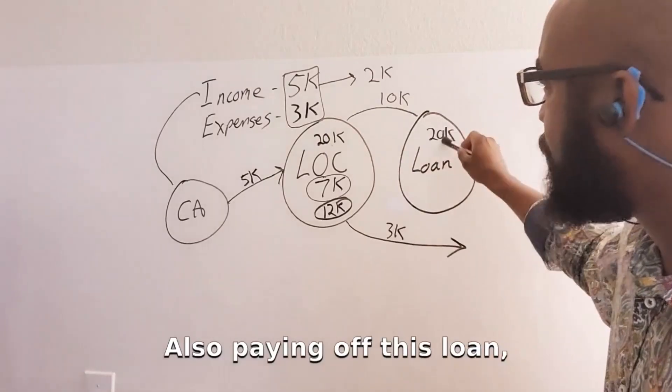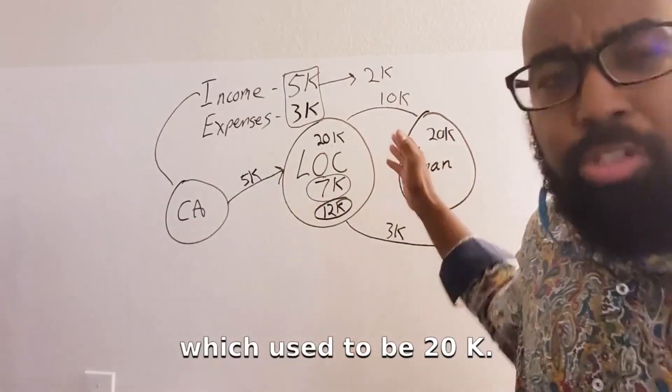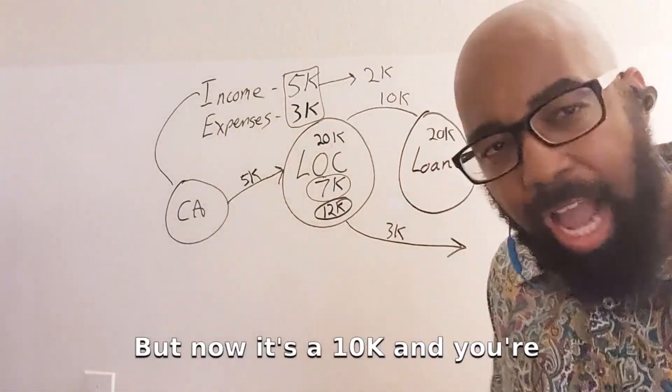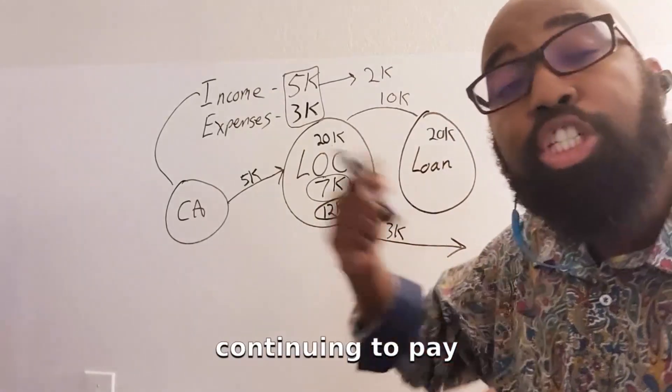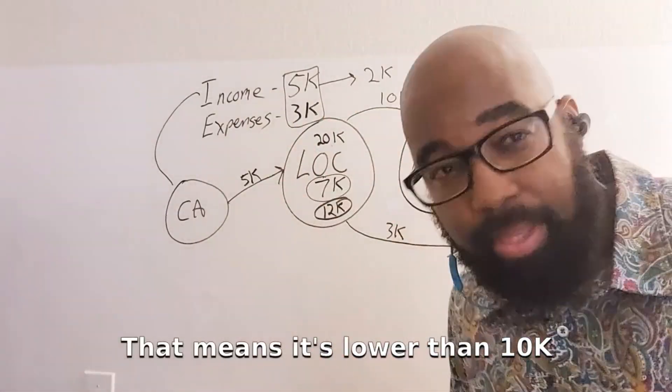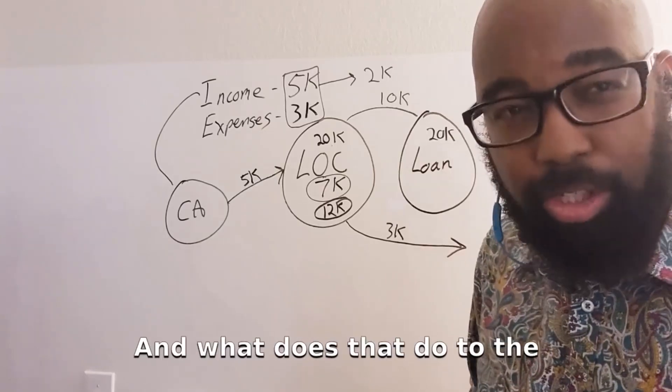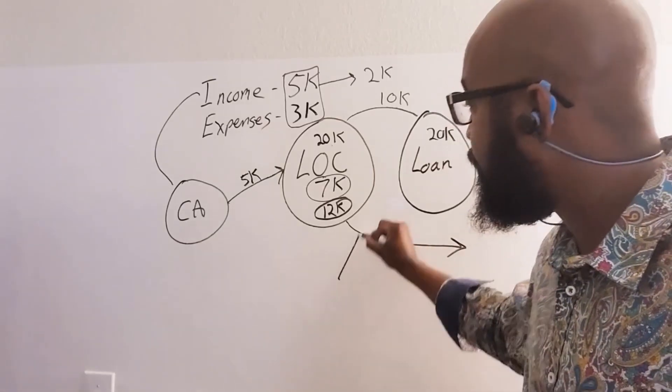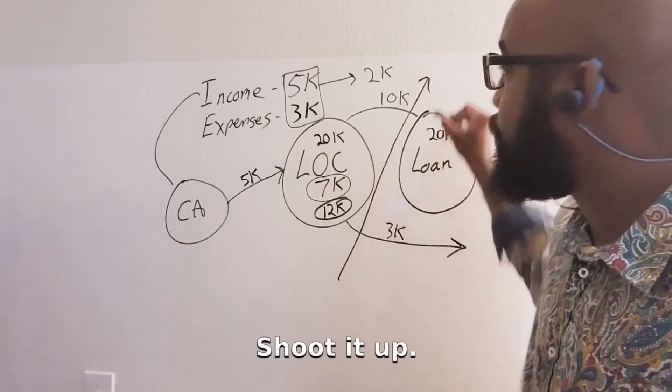We're into also paying off this loan, which used to be 20K. But now it's at 10K and you're continuing to pay monthly. That means it's lower than 10K now. And what does that do to the credit score? Shoot it up.